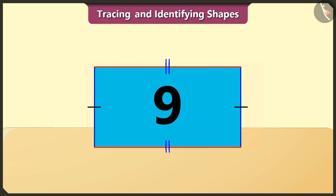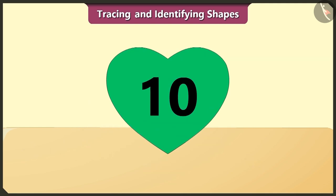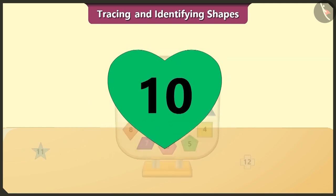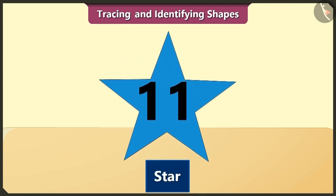Its opposite sides have the same length. The heart is tenth in order. The star is eleventh in order.